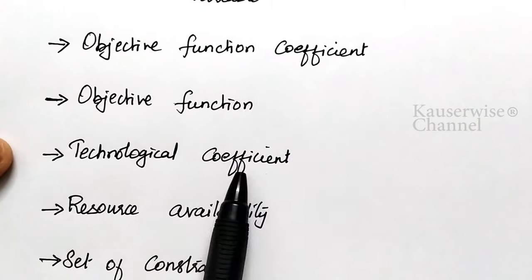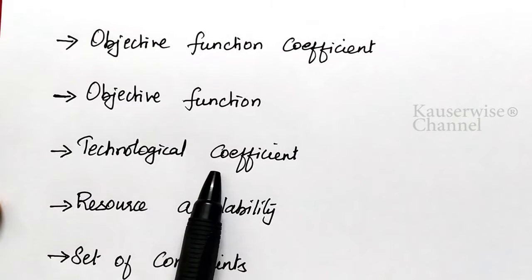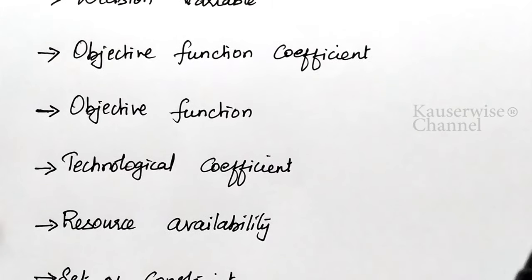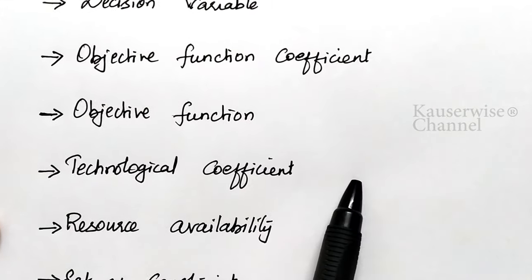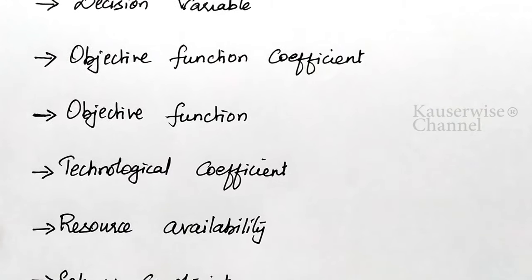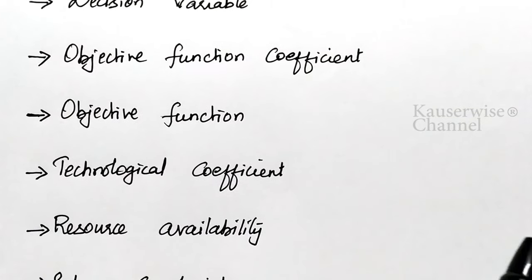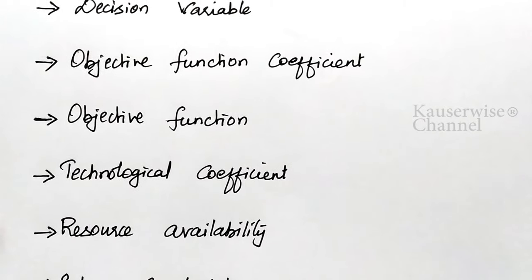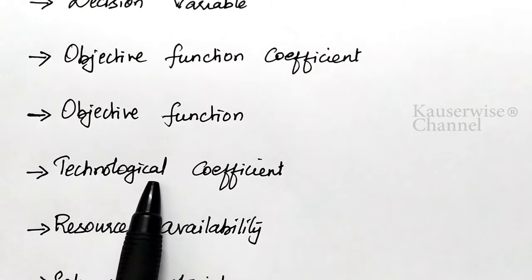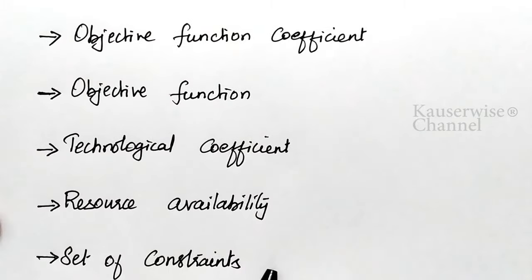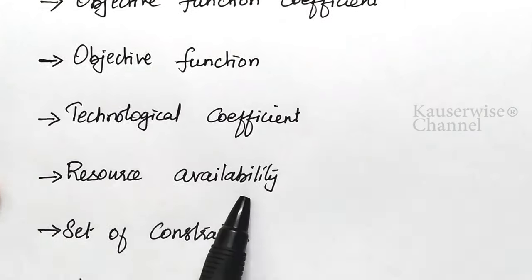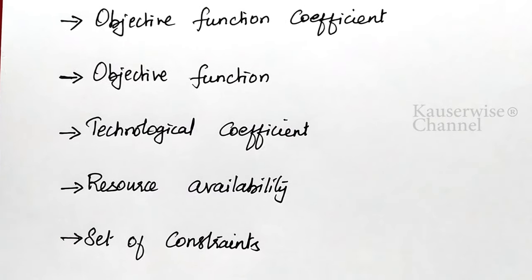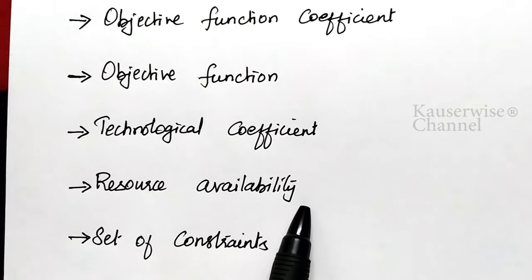The next one is technological coefficient. Technological coefficient means the amount of resources required for an activity. In order to complete a particular activity, what are the various resources required? It is just like a matrix — this is called technological coefficient. And the next one is resource availability: the amount of resource available during the planning period.